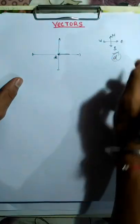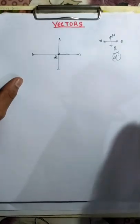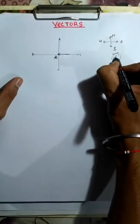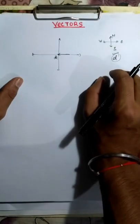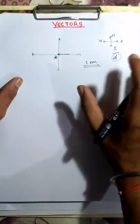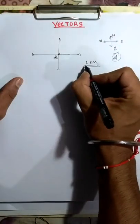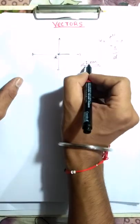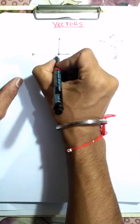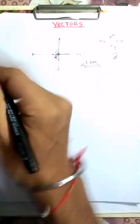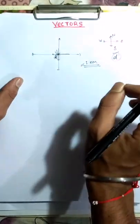You ask a person there: 'Sir, where is this place called Alpha located? I am a bit confused.' The person tells you: 'Just go one kilometer.' But the question arises — one kilometer in which direction? Should I go one kilometer to this direction, or that direction, or any other direction?